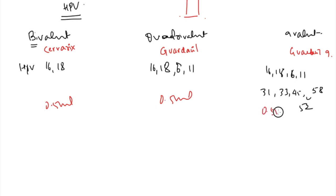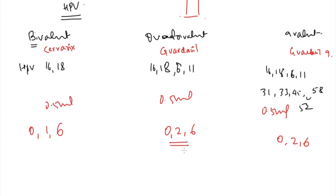All vaccines are given as 0.5 ml IM. The schedule for Cervarix is 0, 1 month, and 6 months. The schedule for Gardasil is 0, 2 months, and 6 months. After giving the vaccine, observe the patient for 15-20 minutes, as the most common side effect is a syncopal attack (loss of consciousness).